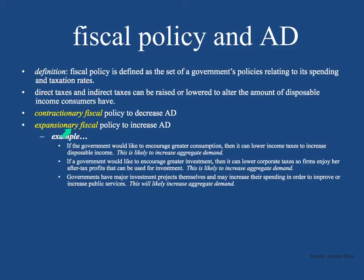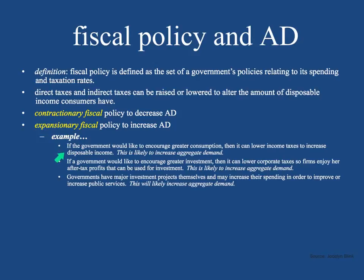The other thing is expansionary fiscal policy, which is the opposite — it's to increase aggregate demand. If you cut indirect taxes or direct income taxes, people are going to have more money to spend. If the tax rate drops from 30% to 10%, that's like getting a free 10% of income — almost like a 10% raise. That will lead to expanding the economy because people tend to spend money if they have it. If the government would like to encourage greater consumption, it can lower income taxes to increase disposable income, and this will likely increase aggregate demand.